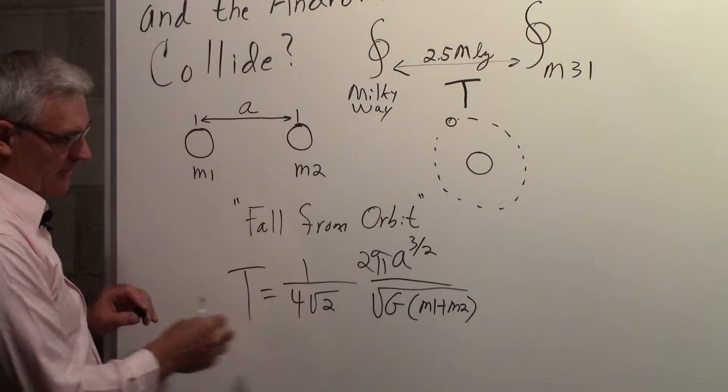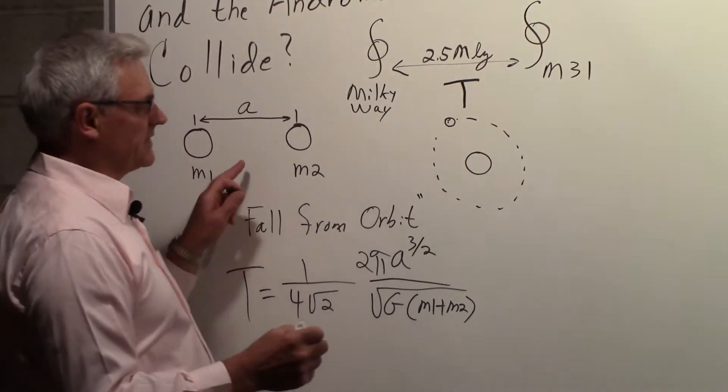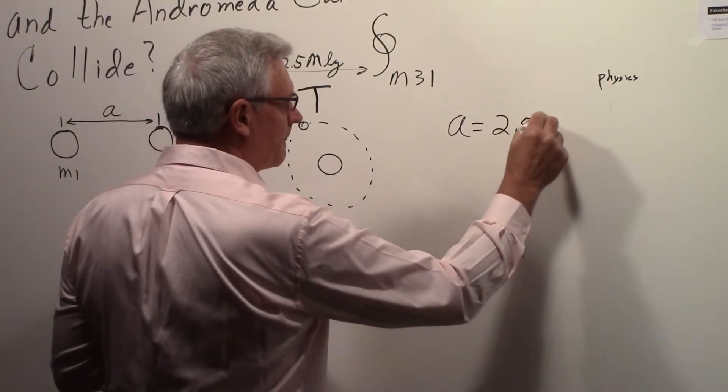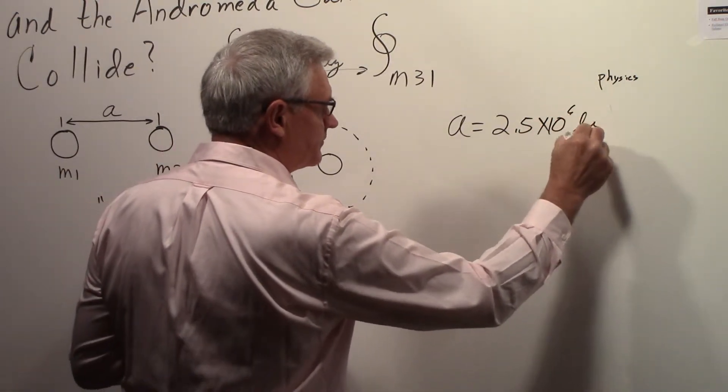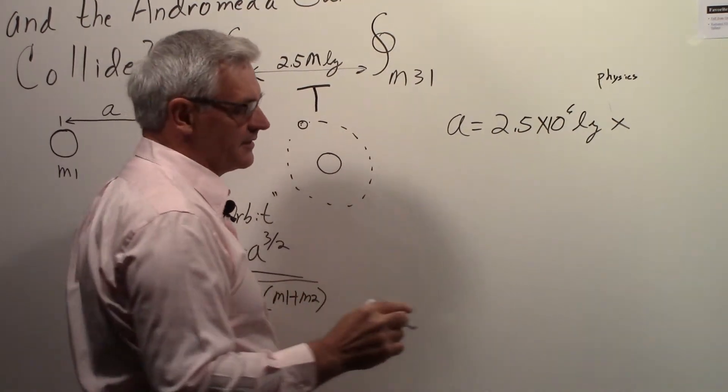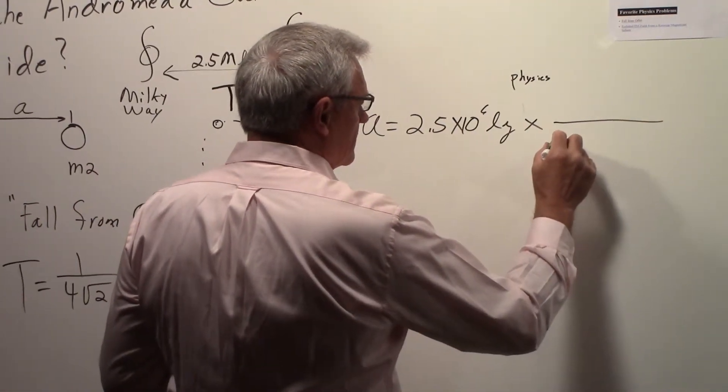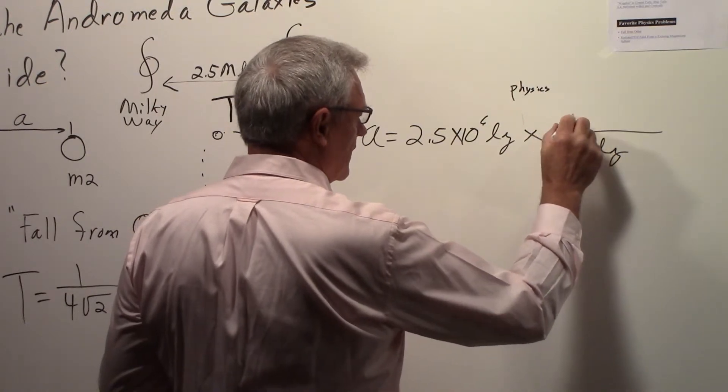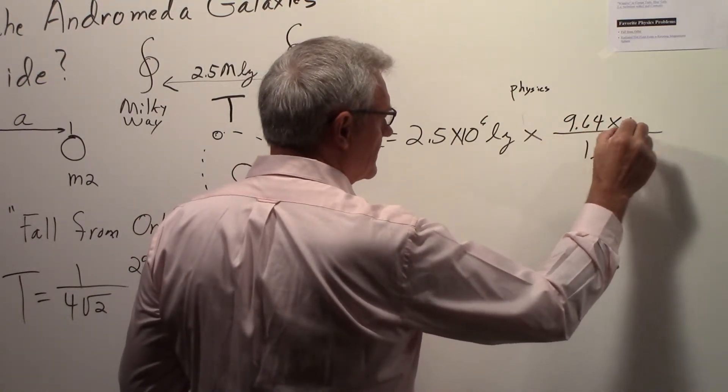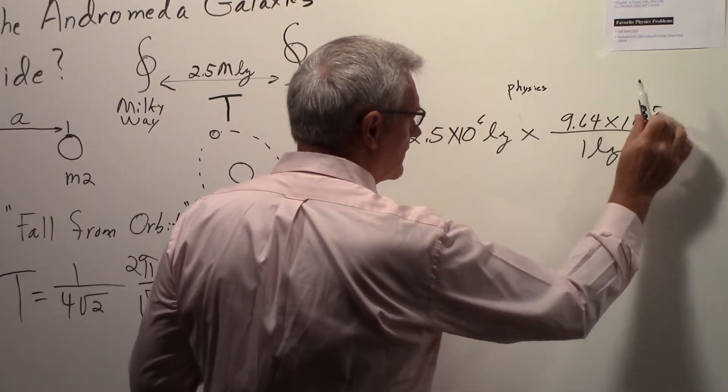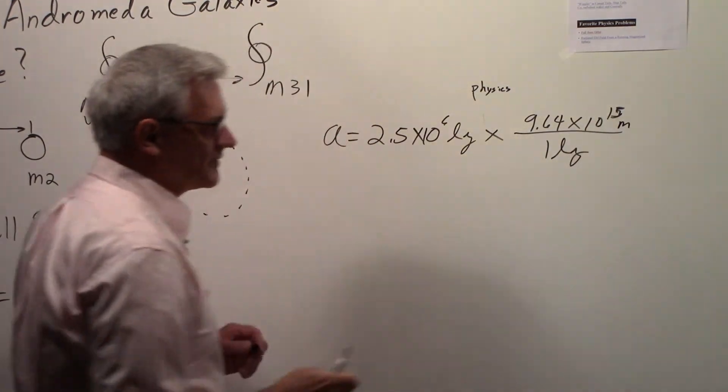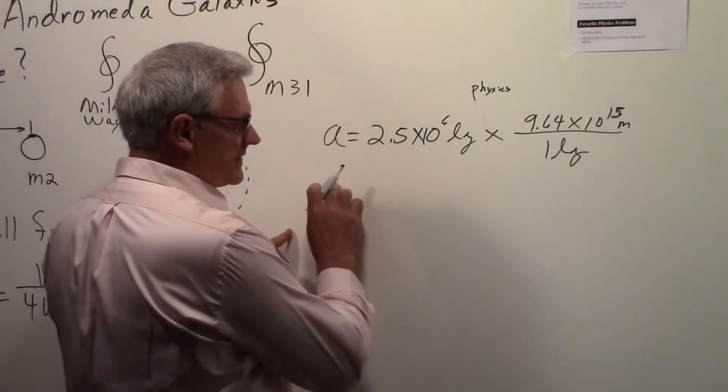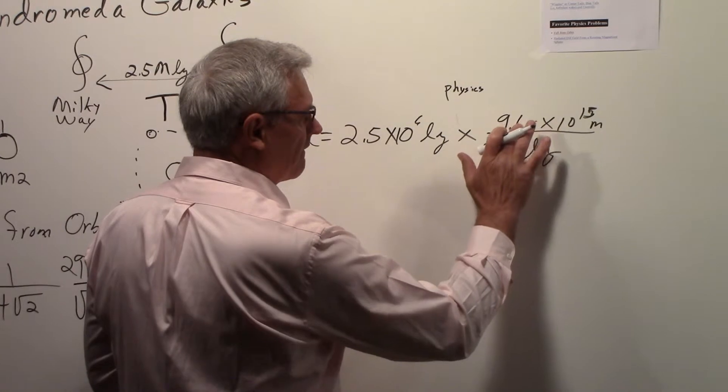In order to apply this equation, we need the distance A, and we said that was 2.5 million light years times 10 to the 6 light years, and we want to convert that to meters. In one light year there is 9.46 times 10 to the 15th meters. If you multiply that out, you'll get the distance in meters.